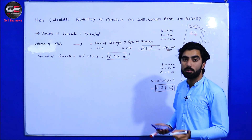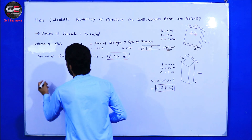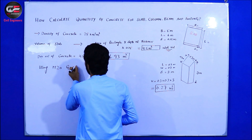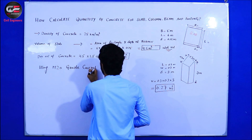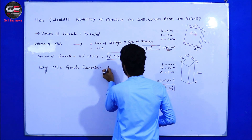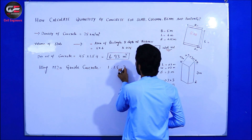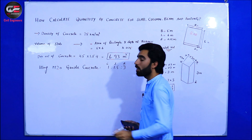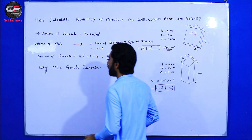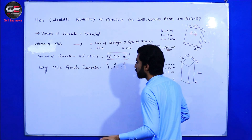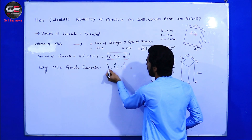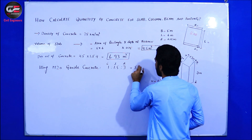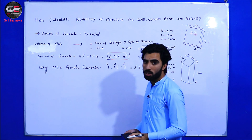In this dry volume we will find the quantity of material: cement, sand, and aggregate. For M20 grade concrete, the ratio is 1 : 1.5 : 3 — where 1 is cement, 1.5 is sand, and 3 is coarse aggregate. The sum of ratio becomes 1 + 1.5 + 3 = 5.5.